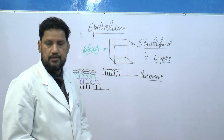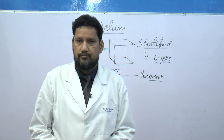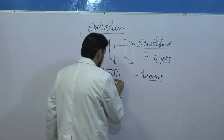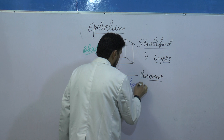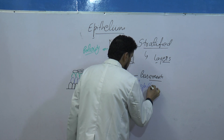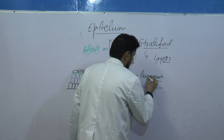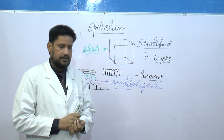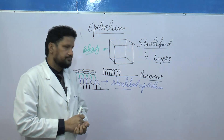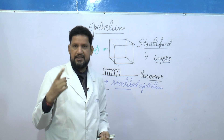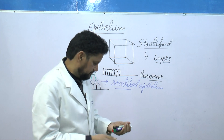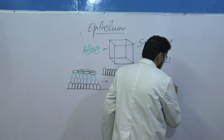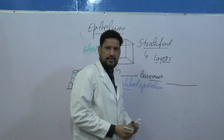When there are multiple layers — more than one layer — the epithelia is known as stratified epithelium. Sometimes an epithelium looks like it is stratified but actually has only one layer. How does this happen? All cells are resting on the basement membrane.